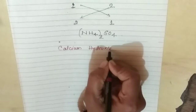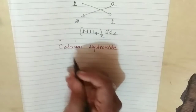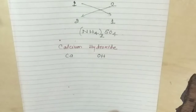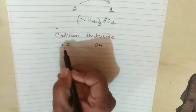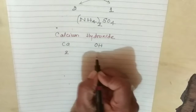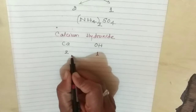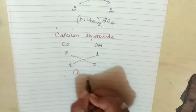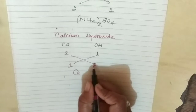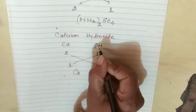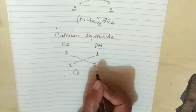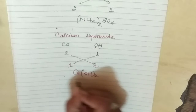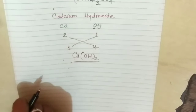The next example is Calcium Hydroxide. The symbol of Calcium is Ca and Hydroxide is OH. The valency of Calcium is 2 and the valency of Hydroxide is 1. Criss cross: 2 goes to OH and 1 goes to Ca. Calcium has only 1, so we write just Ca. OH is a compound radical — it has O and H — so we bracket it. The result is Ca(OH)₂. This is the molecular formula of Calcium Hydroxide.